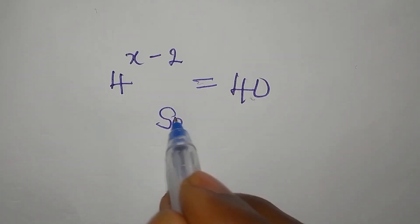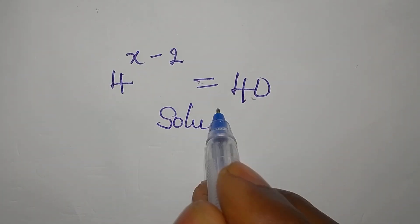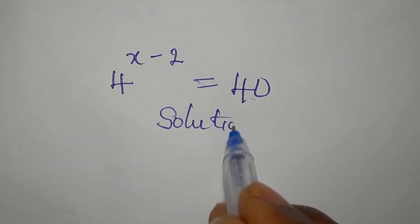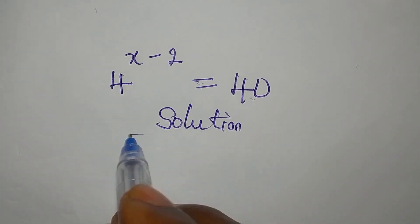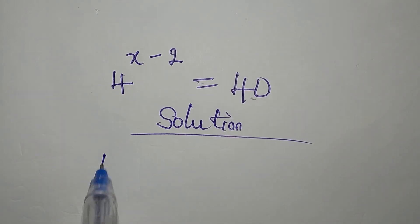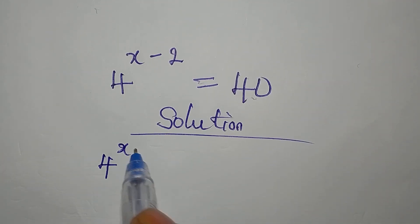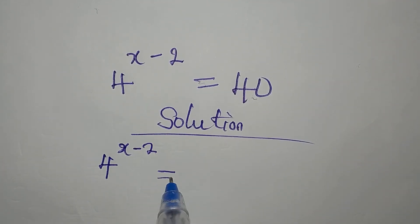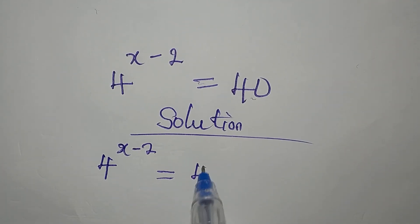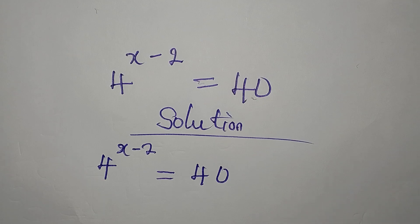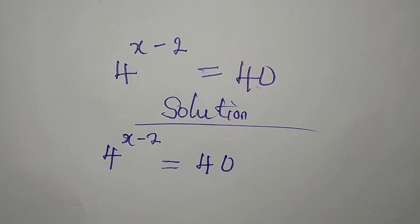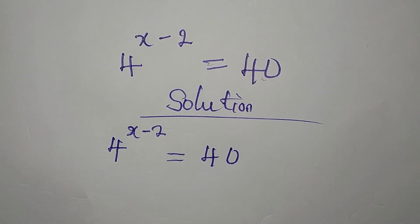Hi, everyone. Let's provide the solution here. 4 to the power of x minus 2 equals 40. So how do we solve this?